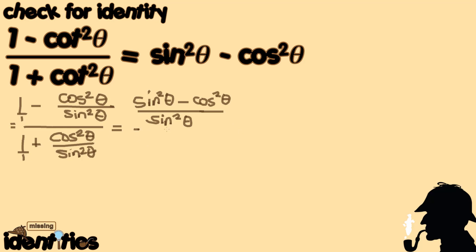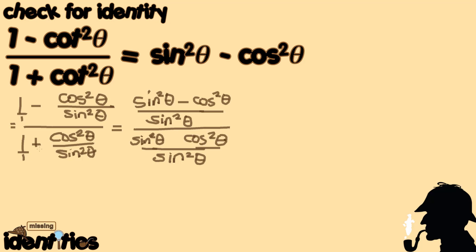We do the same for the denominator. The LCD is still sine squared theta. Sine squared theta divided by 1 times 1 gives sine squared theta, and sine squared theta divided by sine squared theta times cosine squared theta gives cosine squared theta. So the denominator becomes sine squared theta plus cosine squared theta.